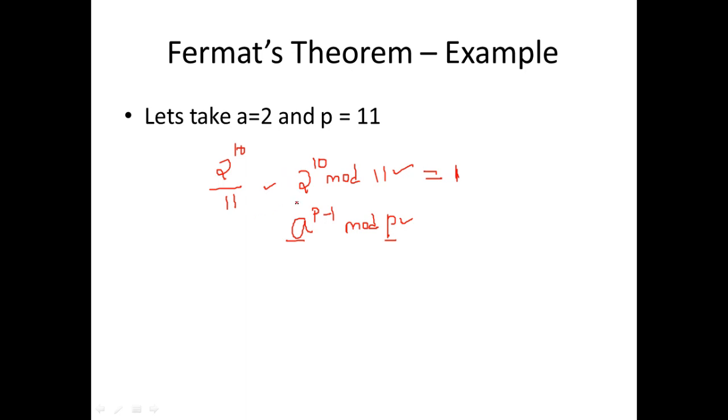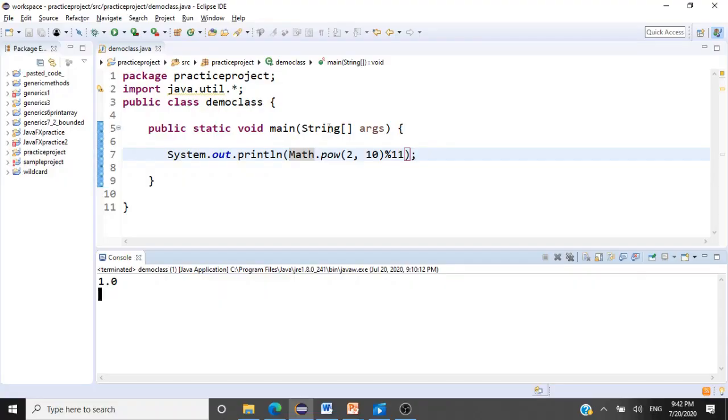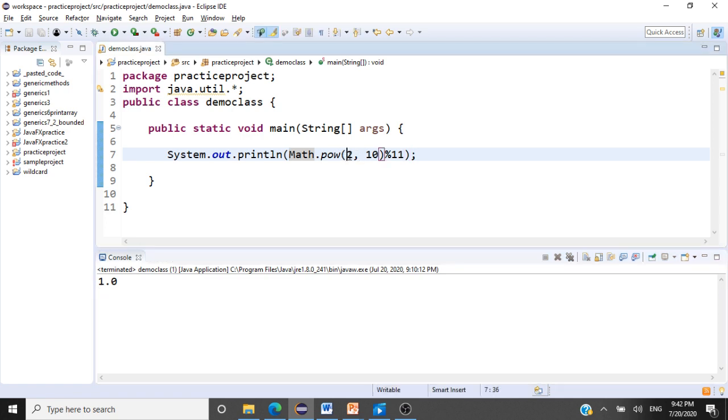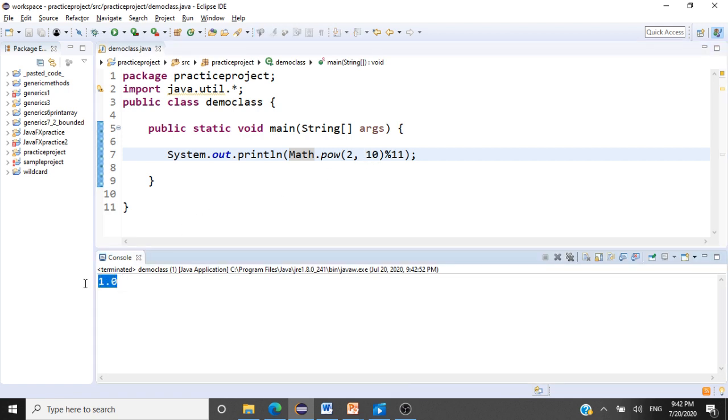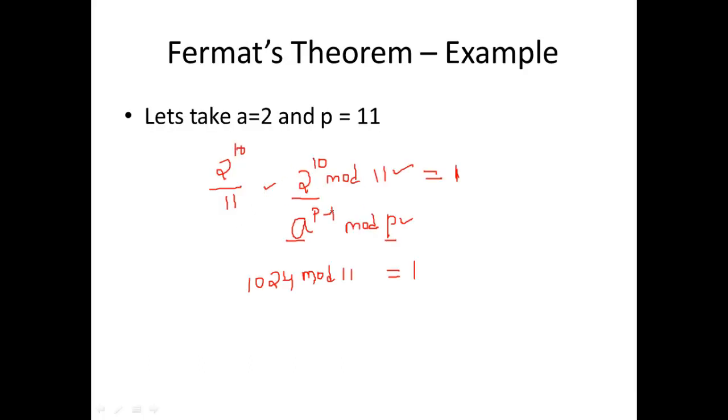You can go and verify that if you find 2 power 10, the result of 2 power 10 is 1024. 1024 mod 11, what is the remainder? That is 1. So I have also written a simple Java code to substantiate my result. It is Math.pow 2 power 10, so we give 2 raised to the power 10 mod 11. If I run this code, it finds 2 power 10 and divides it by 11. The result, the remainder is 1. So we have proved that. So even without that computation, we can very well directly conclude that this is equal to 1 by Fermat's theorem.